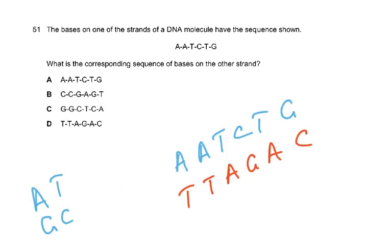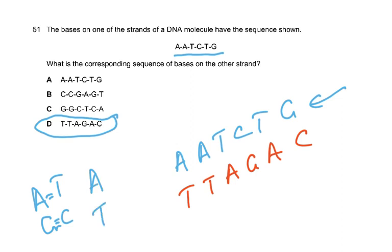The bases on one strand of a DNA molecule have the sequence A, A, T, C, T, G. The base pairing rule is A–T and G–C. So the corresponding sequence on the other strand is T, T, A, G, A, C. That is why the answer is D. If A is on one strand then T must be on the other; if G is present then C must pair with it.